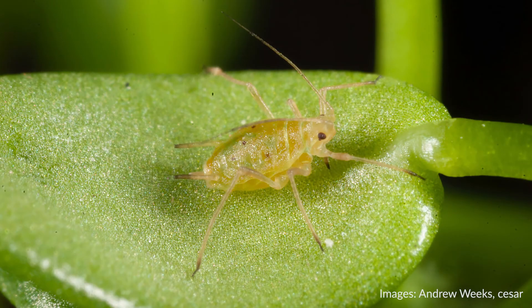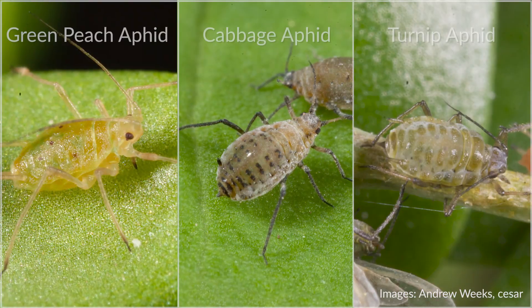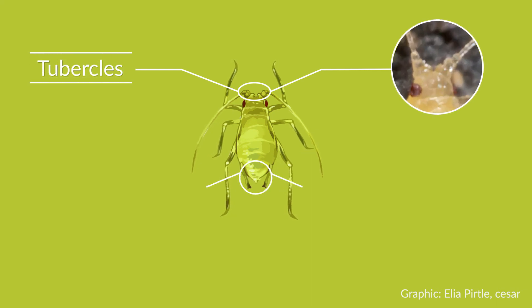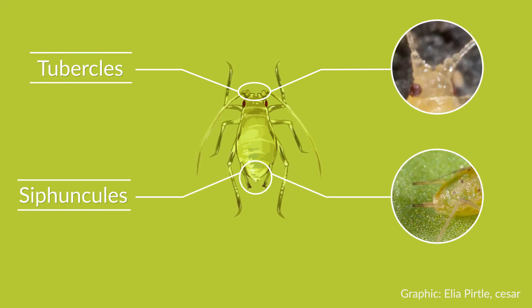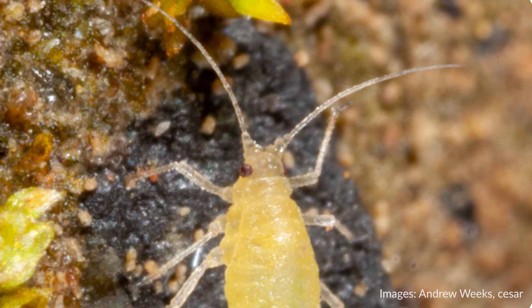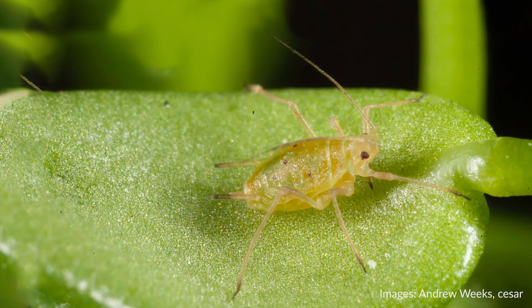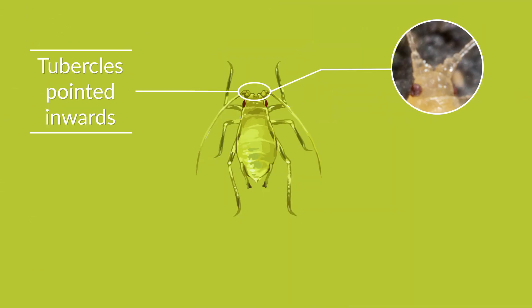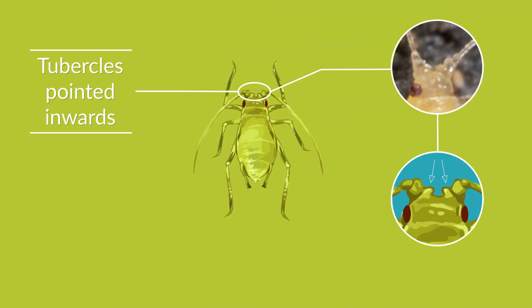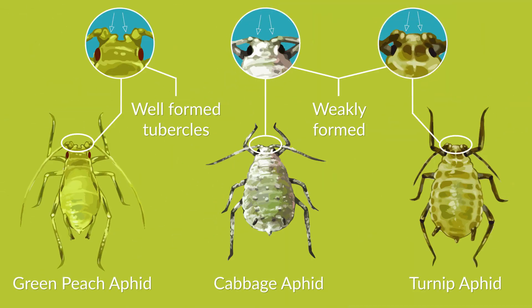Green peach aphid can often be confused with both cabbage aphid and turnip aphid, but there are key morphological features that set these aphids apart. Tubercles and cyfuncles are often used to distinguish between aphid species. Tubercles are small bumps that form at the base of and in between an aphid's antennae. GPA have well-formed tubercles that are pointed inward, while cabbage and turnip aphids do not.